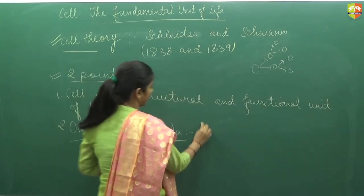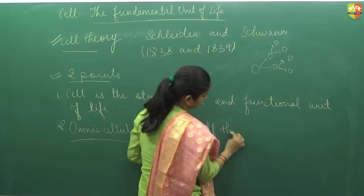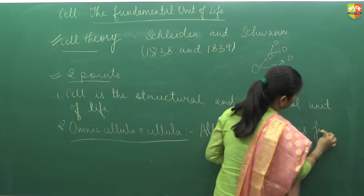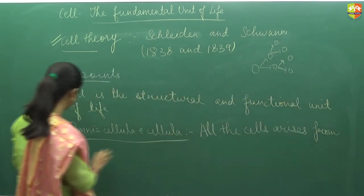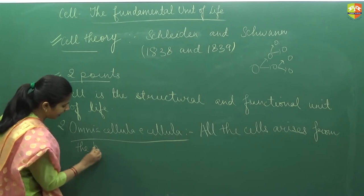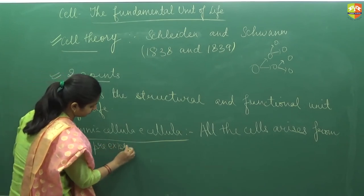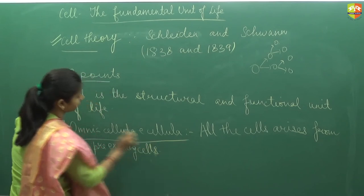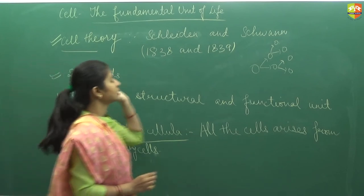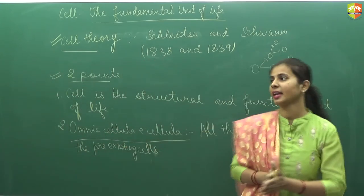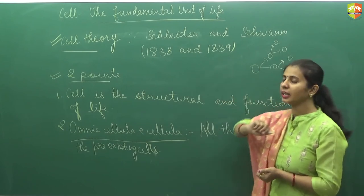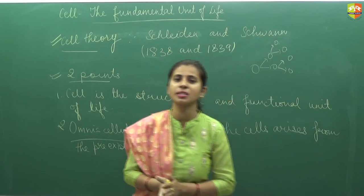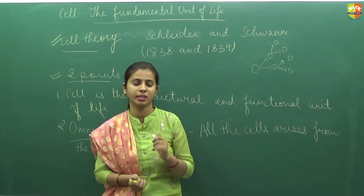So the second theory states that all the cells arise from the pre-existing cells. So these are the two points of cell theory that was given by Schleiden and Schwann in the year 1838 and 1839. Cell is the structural and functional unit of life, and omnis cellularis e cellularis means all the cells arise from the pre-existing cells.